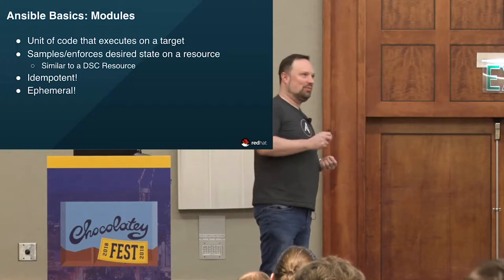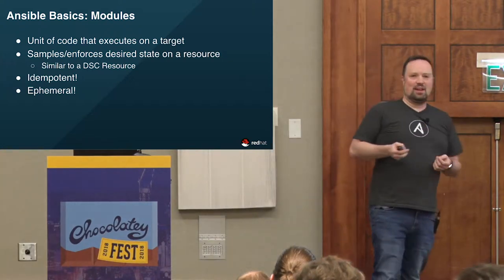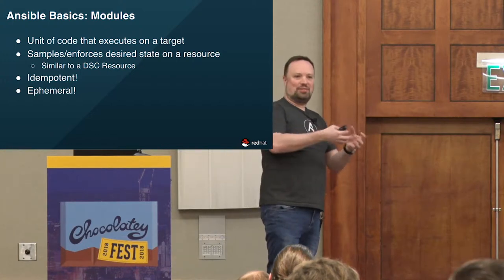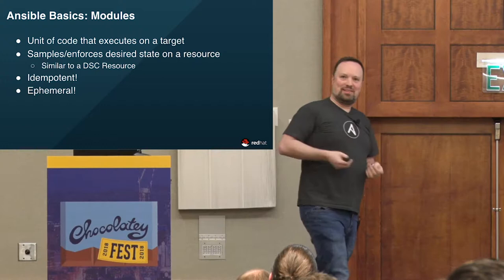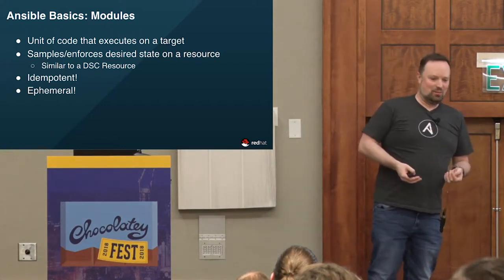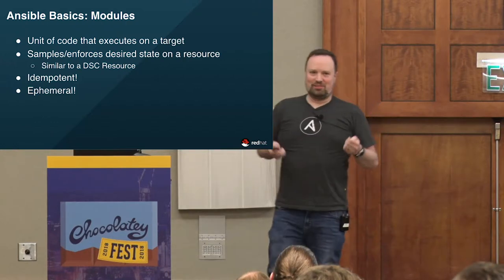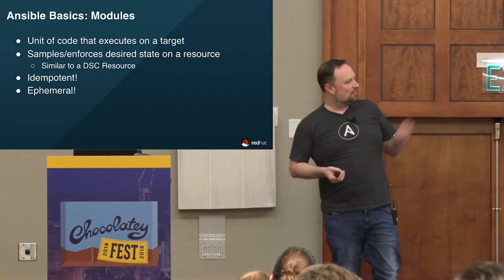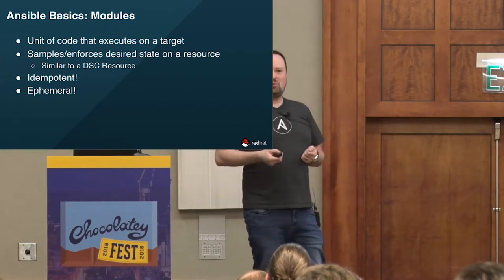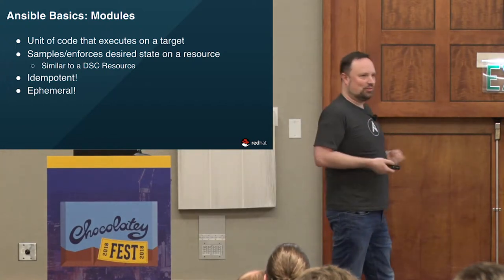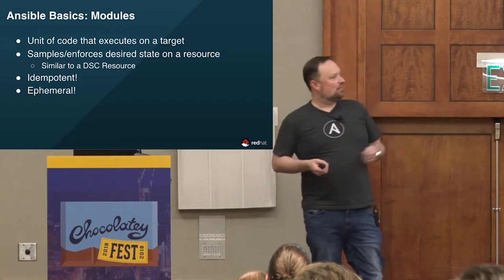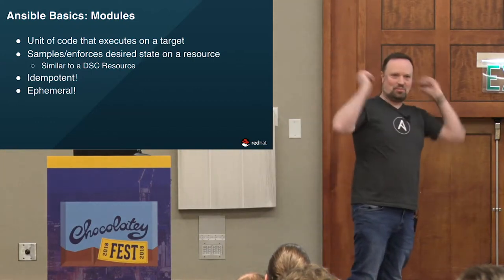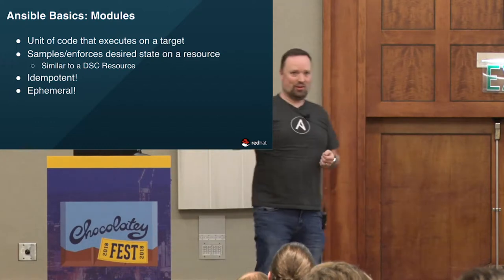A module samples and enforces the desired state on a particular resource. If you're familiar with PowerShell DSC, it's analogous to a DSC resource. One key difference from other products is that we don't store state anywhere — the resource being managed is the state, so our modules have to go out and sample the current state. Properly written modules are idempotent: they only do work when they need to. The module code on the remote target is ephemeral — we leave no footprint. The module gets pushed over, executes, and disappears. We firehose it right into a PowerShell interpreter.